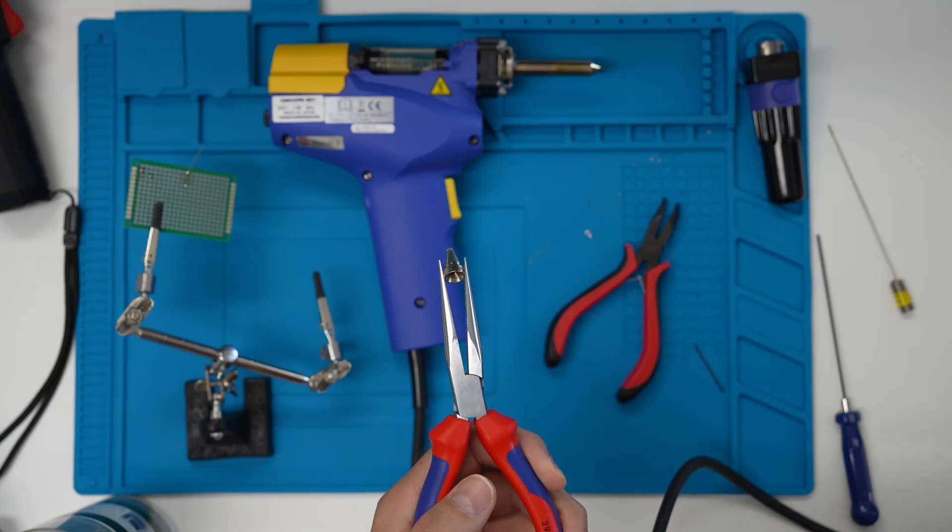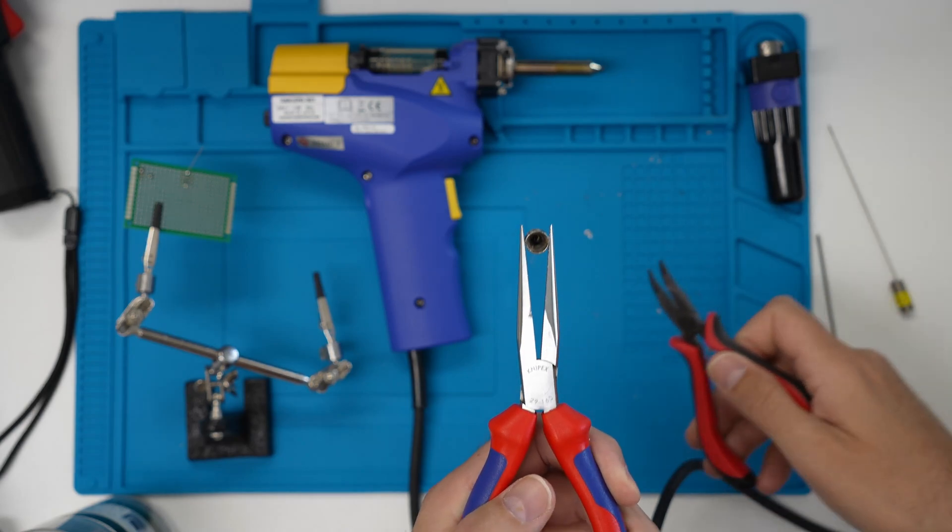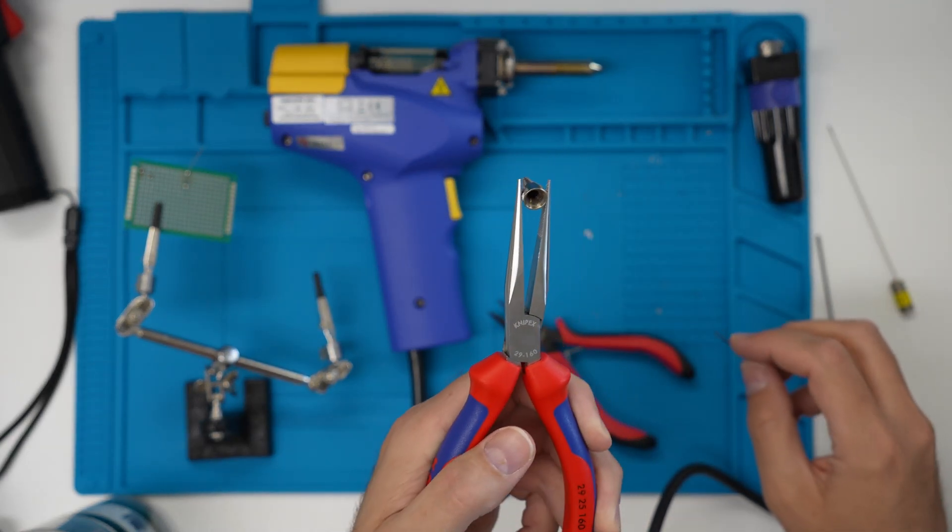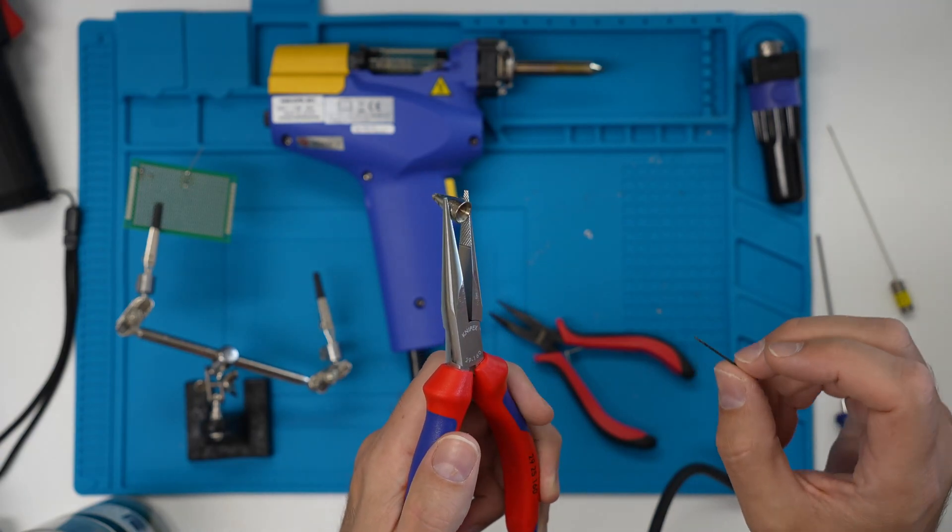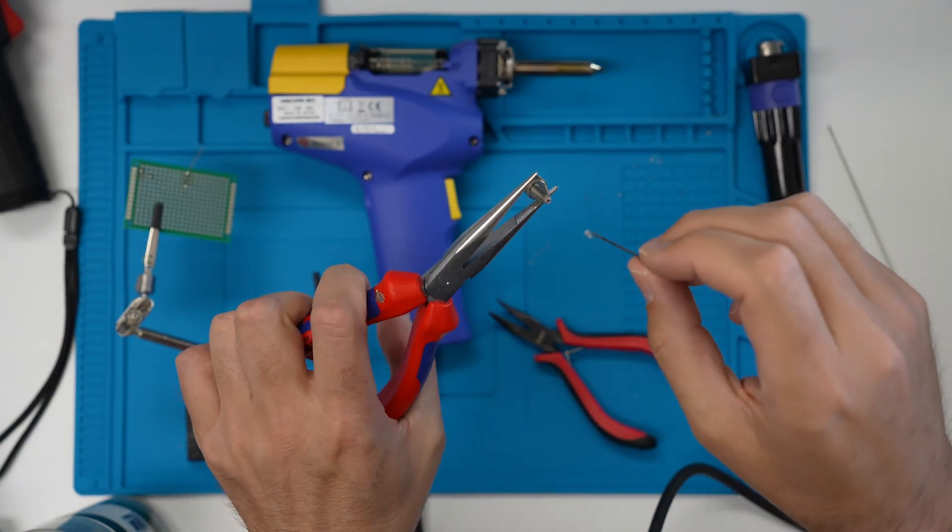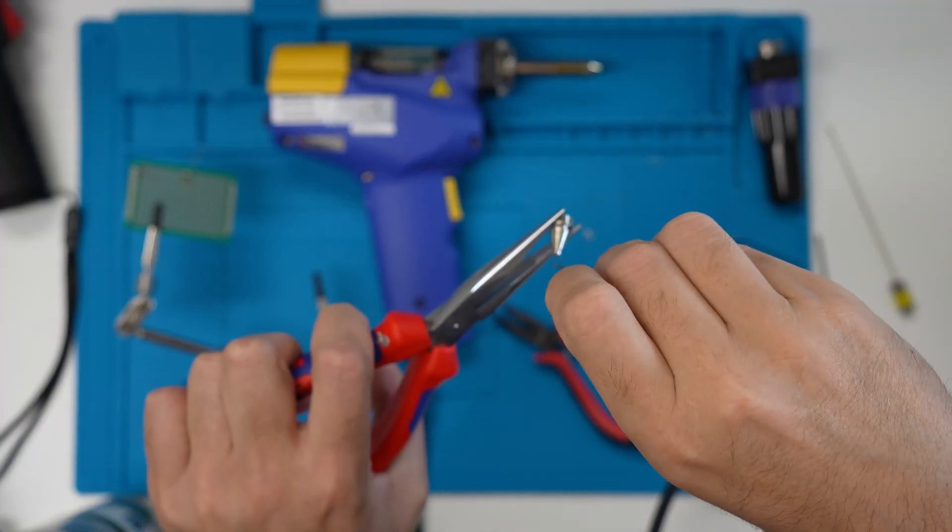After a bit of research I found that some people that get this problem with the tip being clogged use a drill bit to unclog it. So let's try that. So this is a one millimeter drill bit and it should fit inside here. And let's see if we can kind of drill it out.